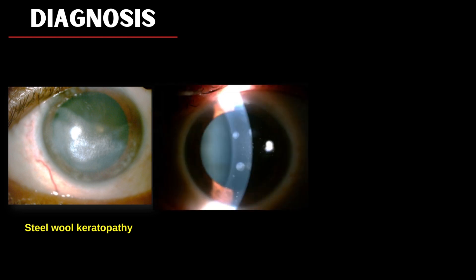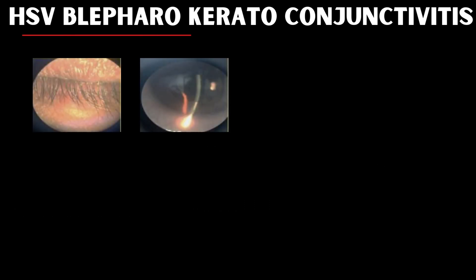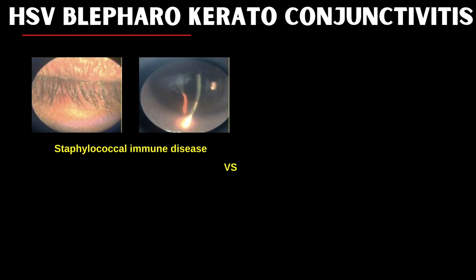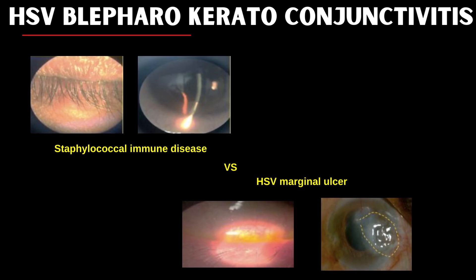This patient surprisingly had pneumoconial scars in the fellow eye which looked like adenoviral keratitis. The next picture shows a healed marginal keratitis. This may look like staphylococcal immune disease, but staphylococcal marginal keratitis will have an associated dry blepharitis with a mild perilimbal immune infiltrate, whereas HSV marginal ulcer is a primary infectious disease and not a reaction. Here, the lid is inflamed and can be associated with discharge, which is not seen in staph immune disease.